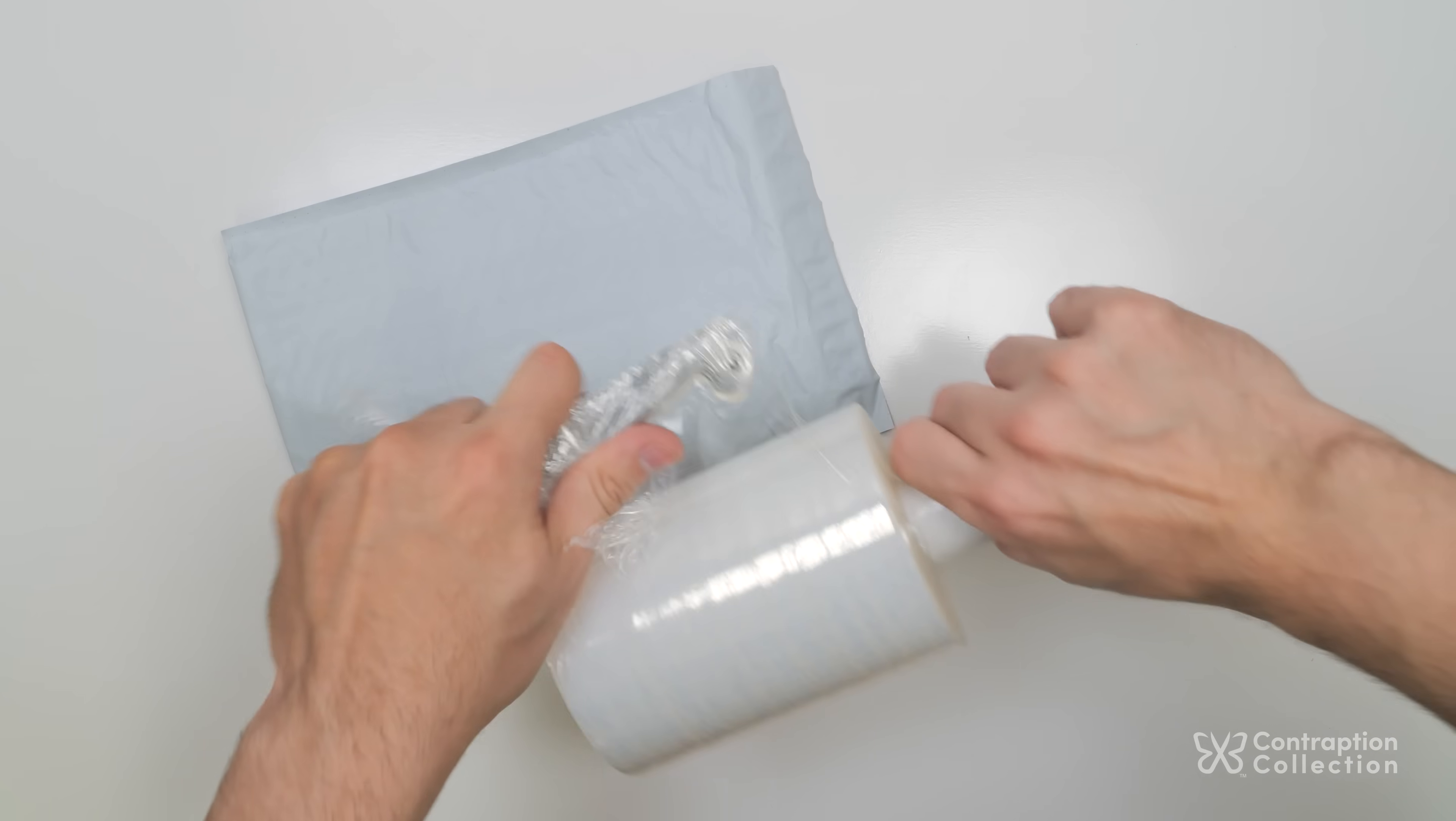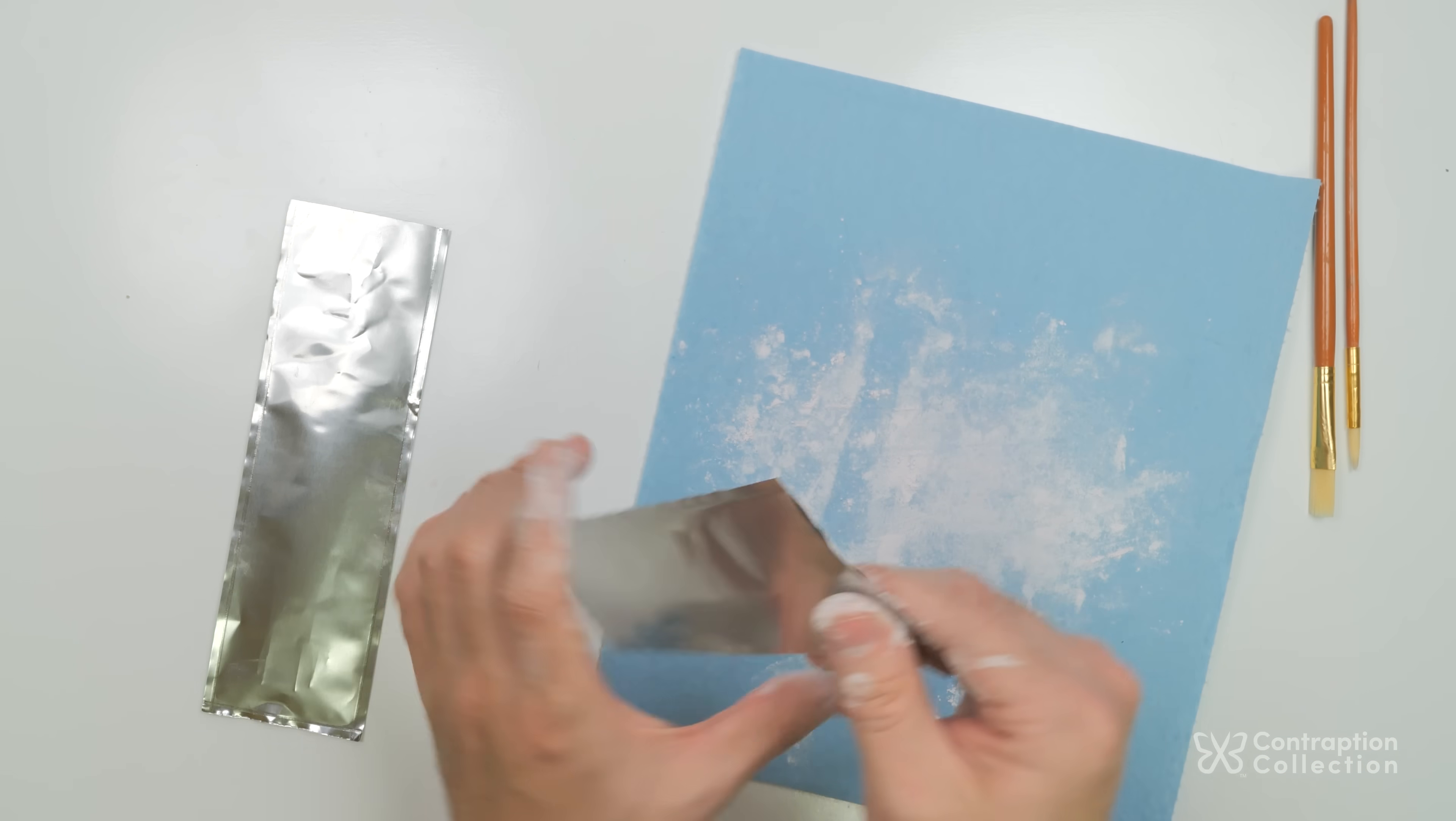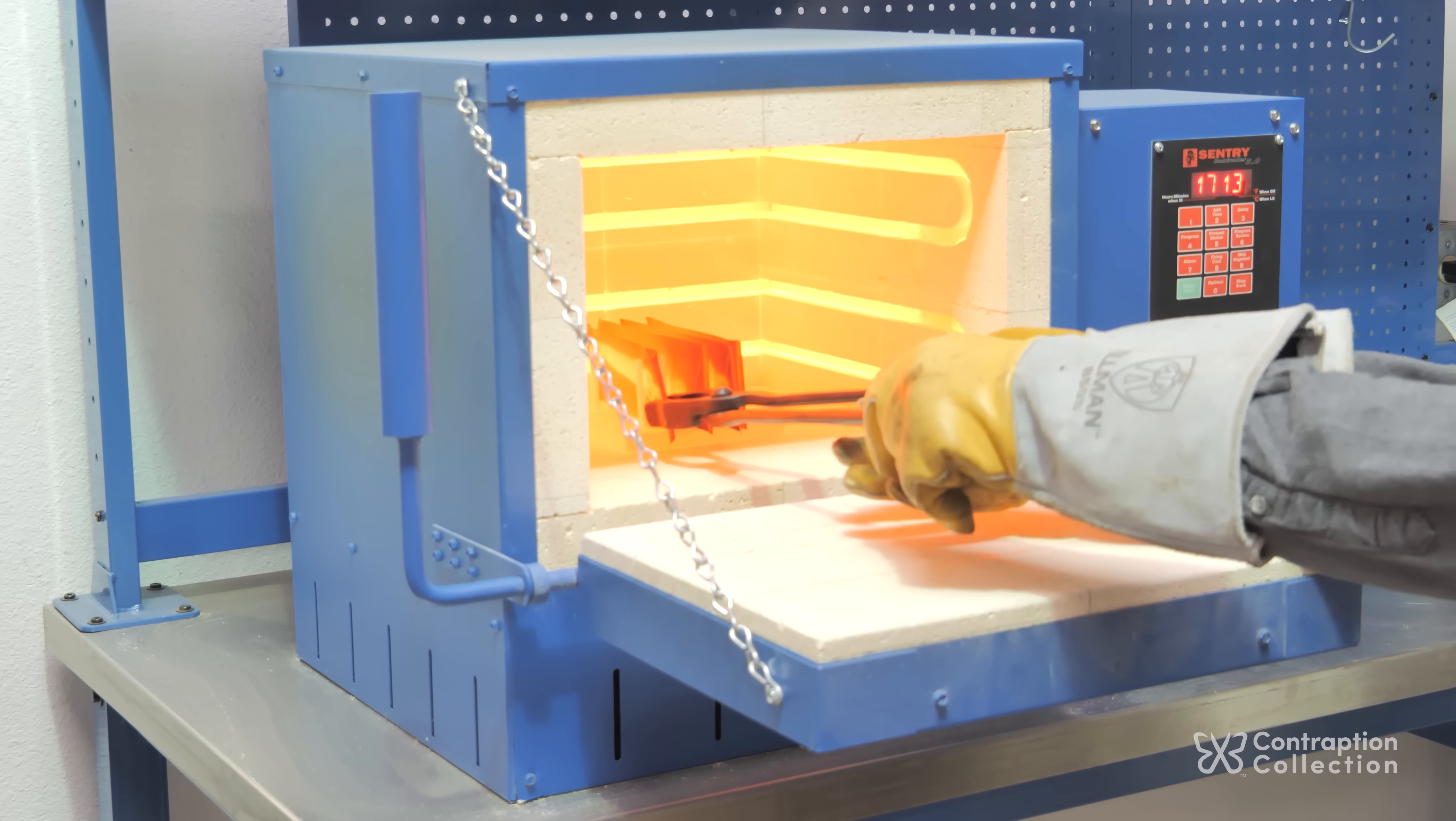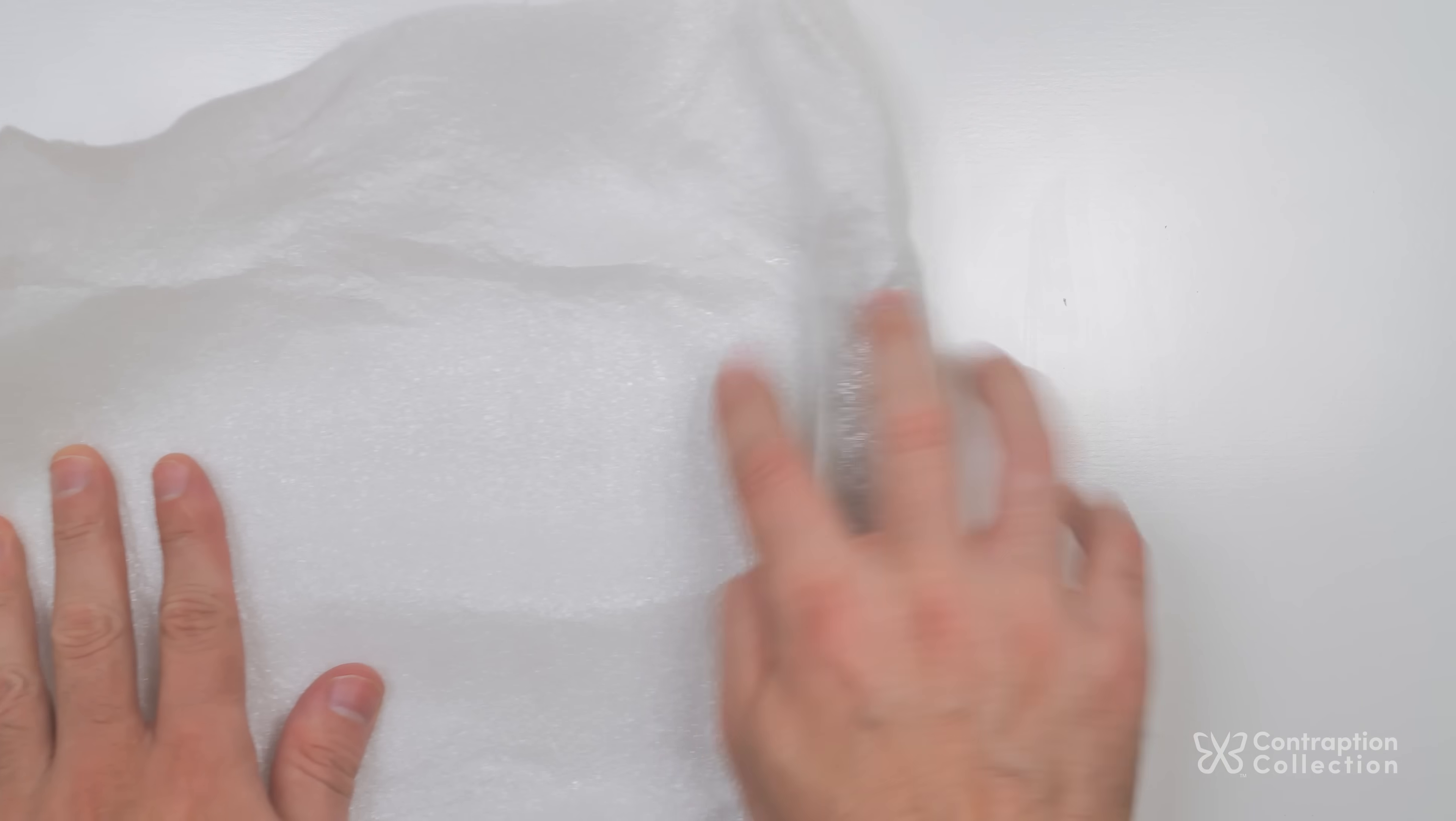So I decided to try something different. I decided to have someone else heat treat the blades. Right now, it seems like my biggest bottleneck for selling scissors is heat treating. It's always a full day of work, and I can only do 8 at a time. But I'm worried I'm getting worse results the more I do at once. So I thought I should at least try sending some blades out to a heat treating company with big vacuum furnaces. And here's the blades I got back.